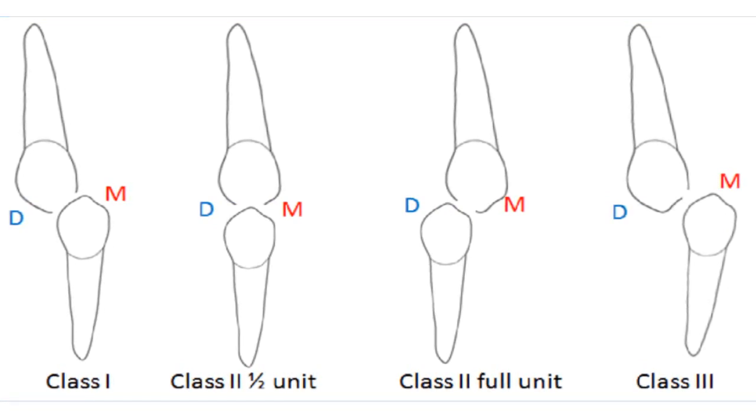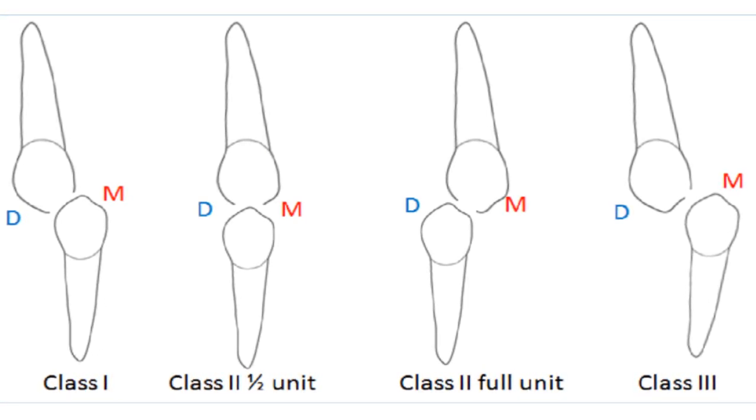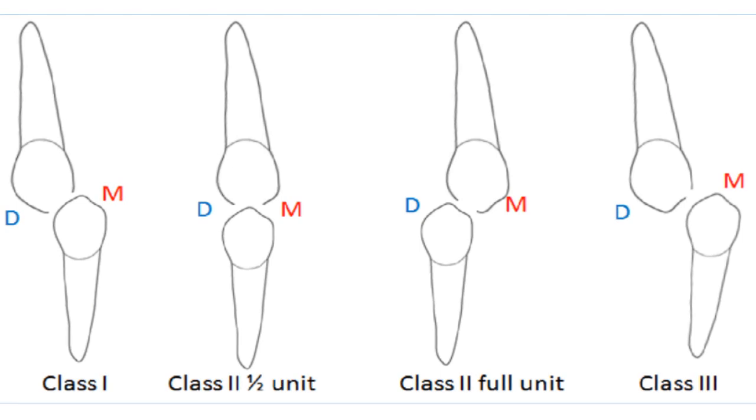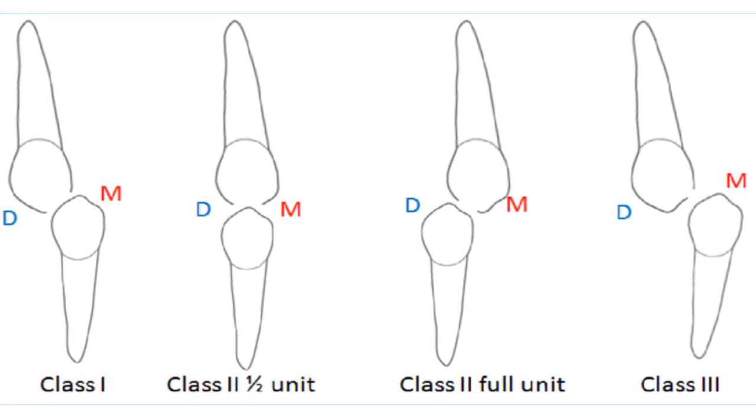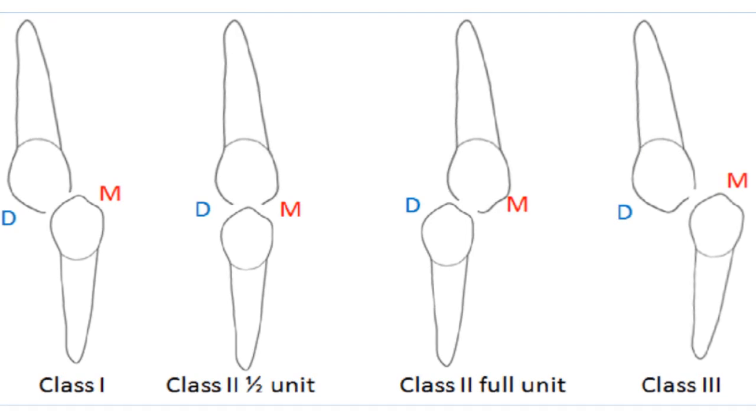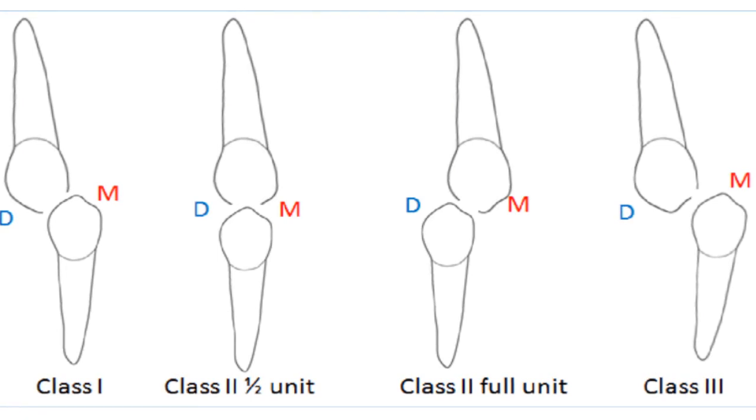In a Class 1 canine relation, the lower canine is more forward. In a Class 2 canine relation, the lower canine is more backward. In a Class 3 canine relation, it is between the lower canine and the first premolar. I think it is much easier for you to know it like that.